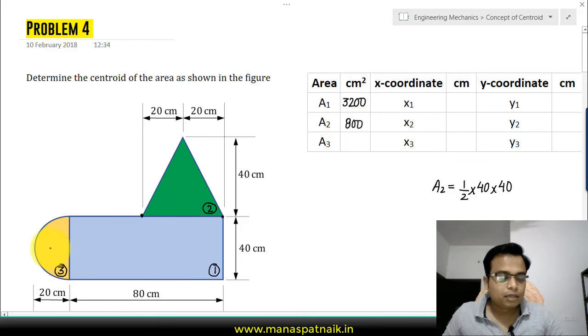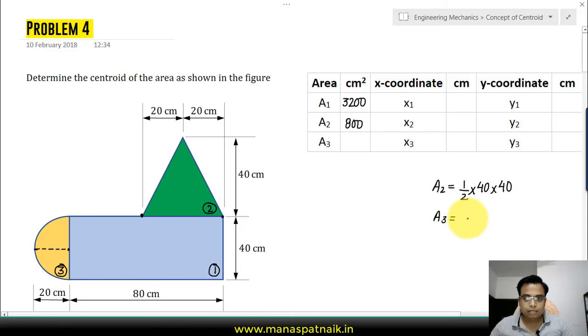Finally we have to calculate the area of the semicircle. You can clearly see that the radius of this semicircle is 20 centimeters. Its area is going to be equal to pi r squared, pi into 20 squared, but that's the area of a circle. When you divide it by 2 you will get the area of its semicircle. Put that into a calculator and you're going to get 628.31.